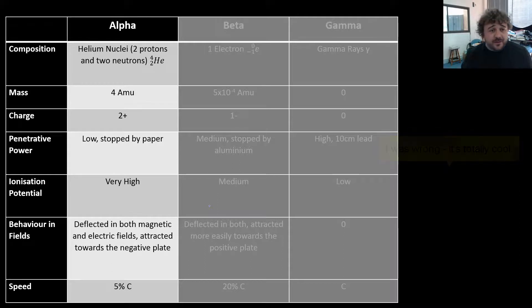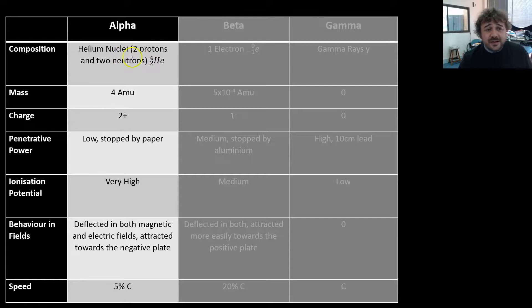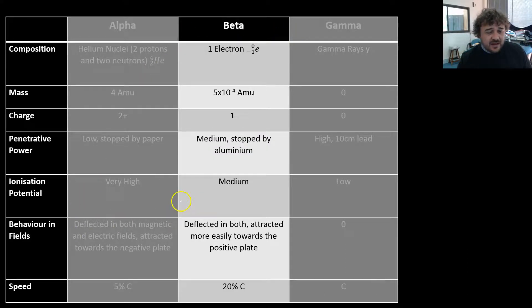Now let's have a quick little summary through the three of them. An alpha particle is a helium nuclei. It has a mass of four atomic mass units. It has a charge of plus two, and the reason it has this charge of plus two is it has no electrons. It is just a nuclei. But the penetrative power is actually really low. It's essentially stopped by paper. However, the ionization potential is very, very high. In other words, if it collides with one of your atoms, it can change it to something else very easily. Behavior in fields: It's able to be deflected in magnetic and electric fields, and it is attracted towards the negative plate because it has the positive charge. And its speed is about 5% of the speed of light. Now that's what C equals. C is the speed of light.